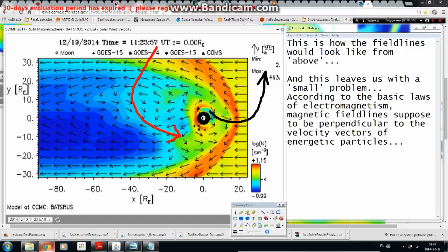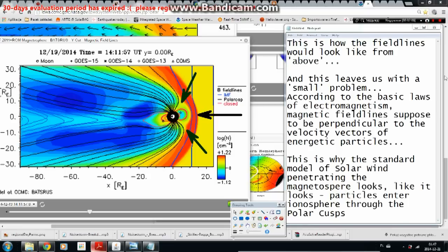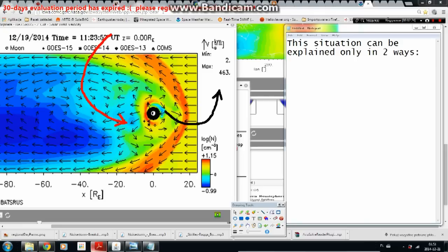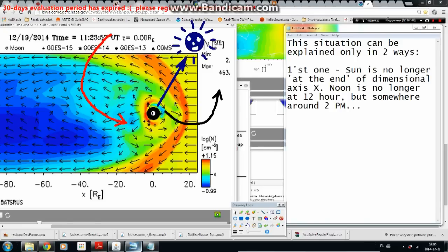And this leaves us with a small problem. According to the basic laws of electromagnetism, magnetic field lines supposed to be perpendicular to the velocity vectors of energetic particles. This is why the standard model of solar wind penetrating the magnetosphere looks like it looks. Particles enter ionosphere through the polar cusps. This situation can be explained only in two ways.